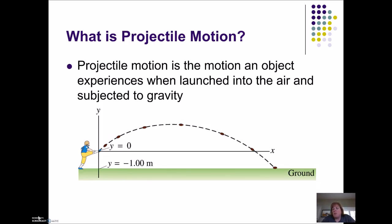What is projectile motion? It's when an object is launched into the air and just subjected to gravity. You might be thinking, well, how is that different from freefall? The only difference is that I'm launching it at some angle to the horizontal. So instead of just being vertical motion like freefall, I'm now moving in two dimensions.